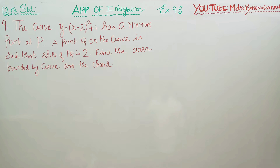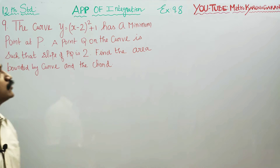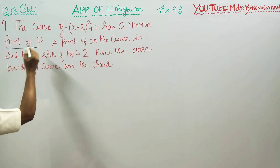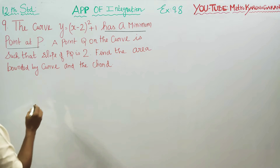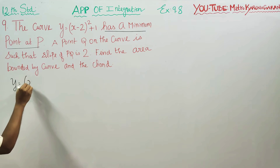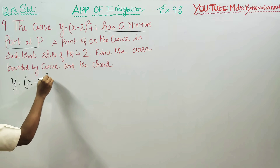Dear 12th standard students, in exercise number 9.8, sum number 9, the curve y is equal to x minus 2 whole square plus 1 has a minimum point at P. So y is equal to x minus 2 whole square plus 1.